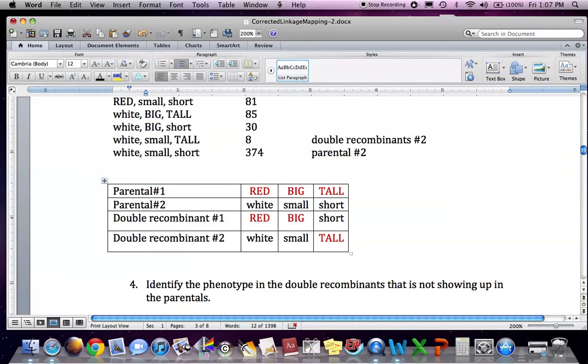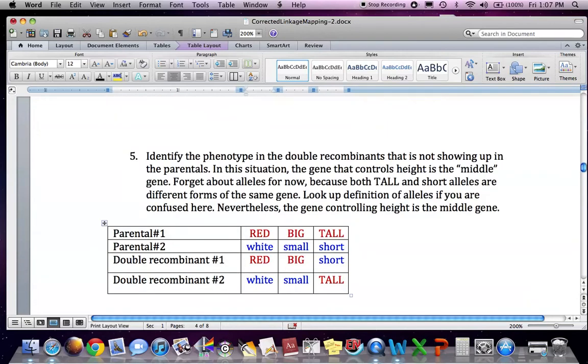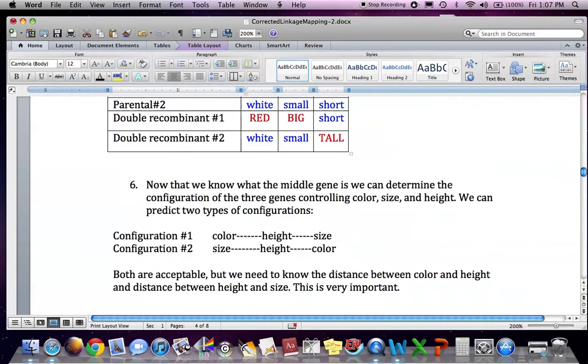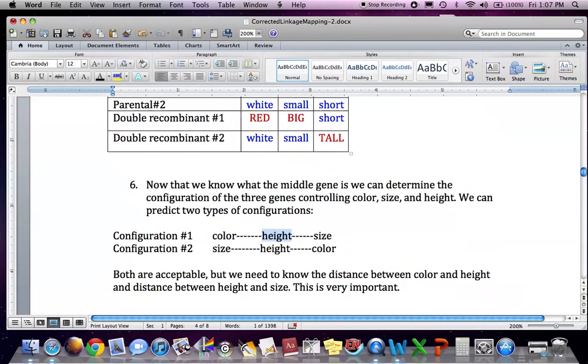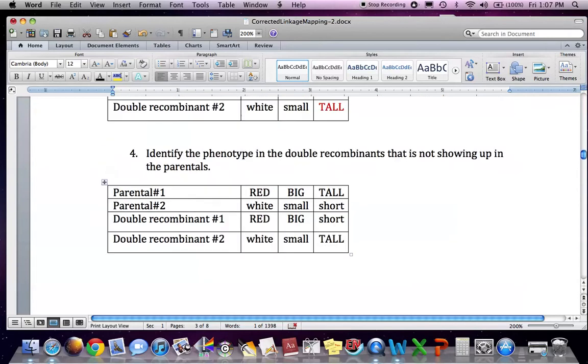So what we see here is the parentals are red, big, and tall, and parental number two is white, small, and short. Then the double recombinants are red and big but short, and the other double recombinant is white and small but tall. So therefore you conclude that the middle gene is height, controlling height, because these are the guys that are moving and not segregating with the other genes. So they're not being like parental. So a double recombination event occurred.